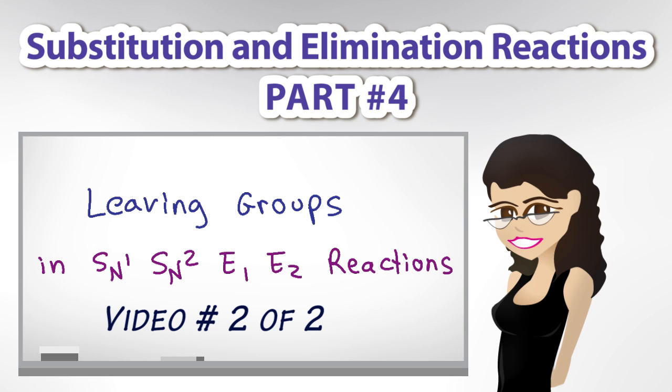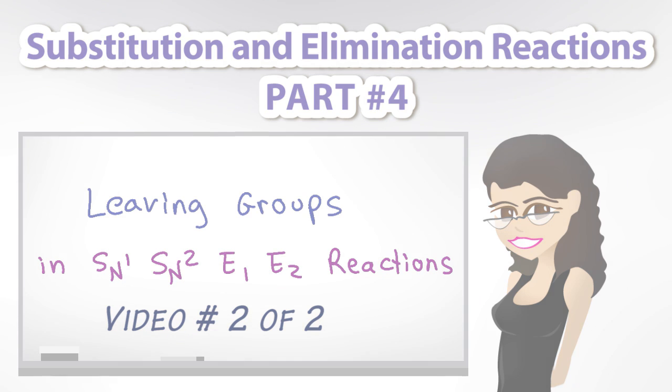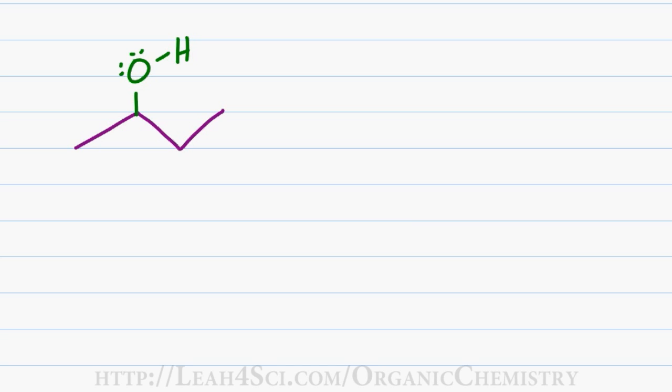In part 1 we discussed the concept and effect of a leaving group in substitution and elimination reactions. In this video we'll look at how to make OH, which is a bad leaving group, into a good leaving group by bribing it.